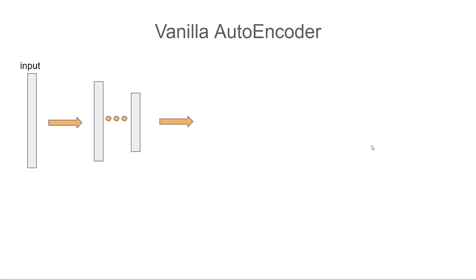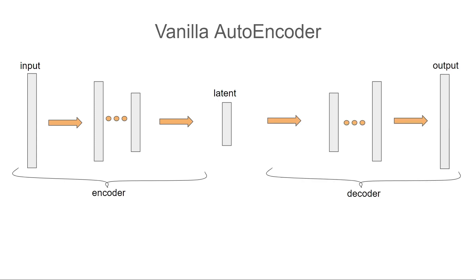Until you get to the latent vector, which is the bottleneck, the vector where all of the information is most compressed. The part of the autoencoder up until the latent vector is called the encoder. The other part is called the decoder and it's a mirror image of the encoder.